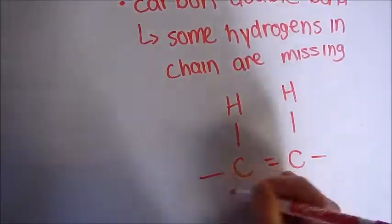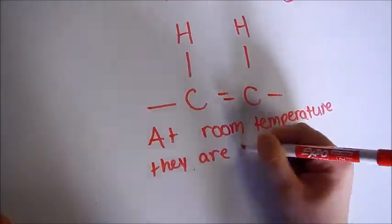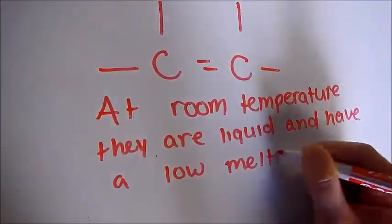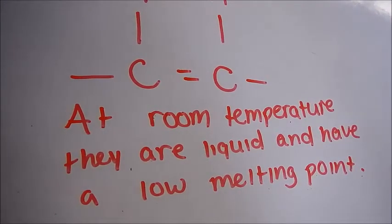Also, in unsaturated fats, some hydrogen atoms in the middle of the chain are missing. This gap leaves two carbon atoms connected by a double bond rather than a single bond. In the diagram, we can see the double bond.